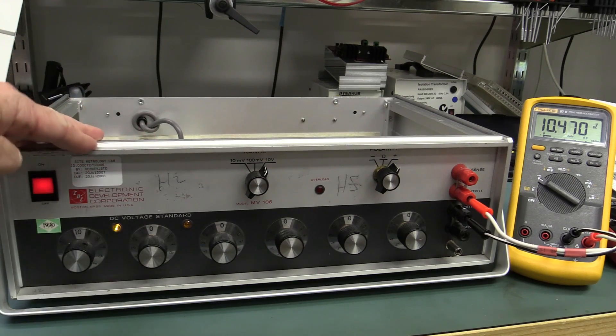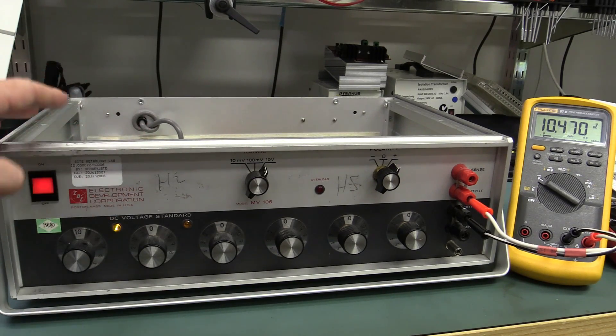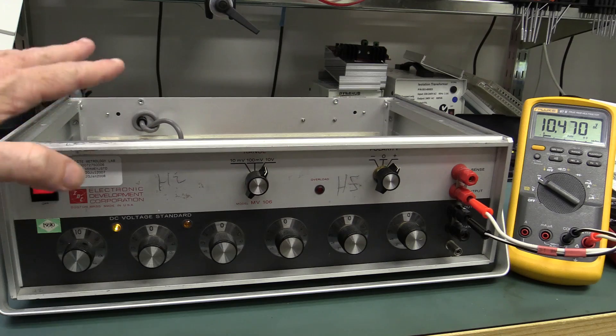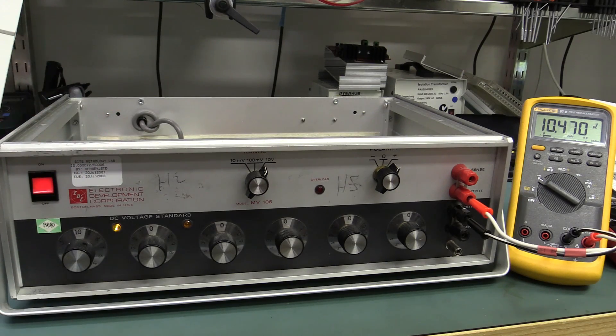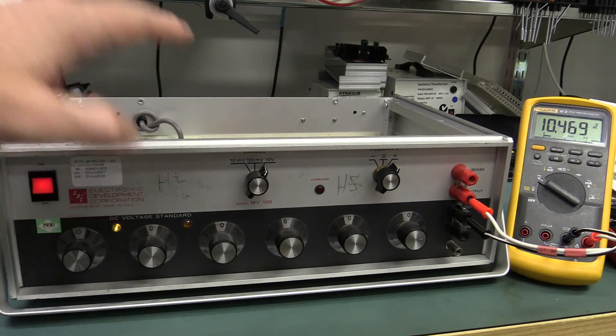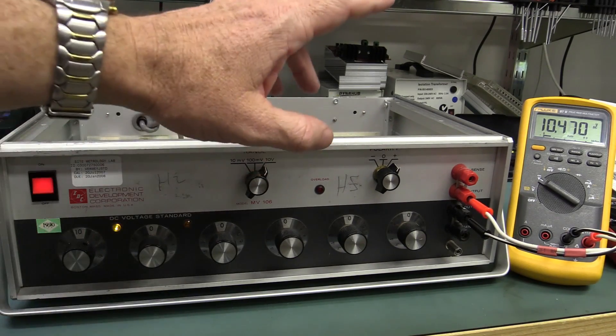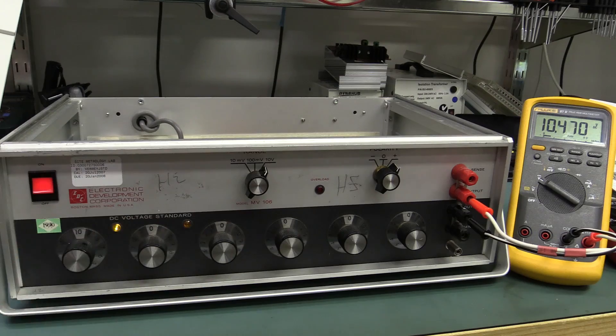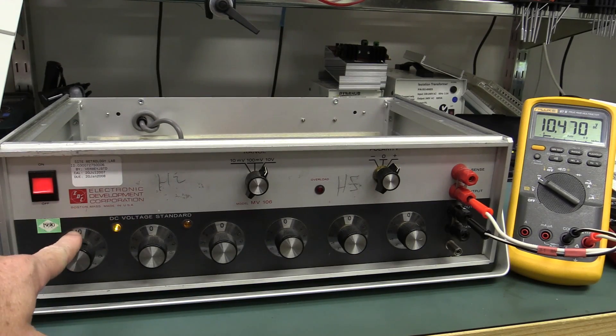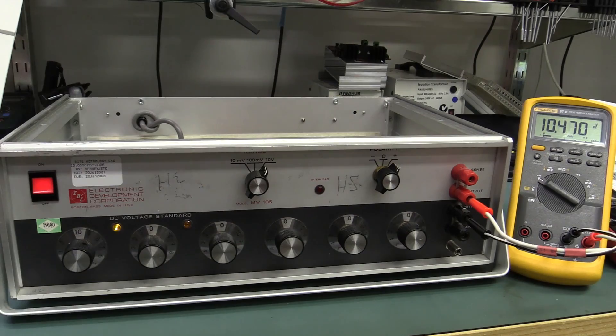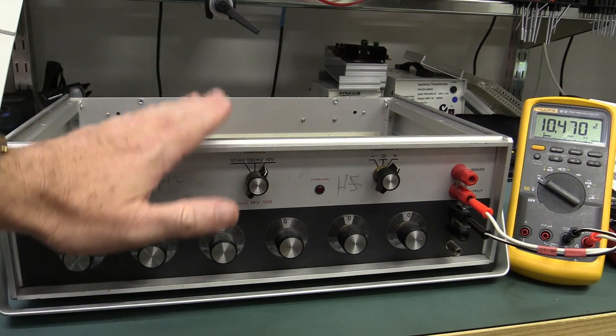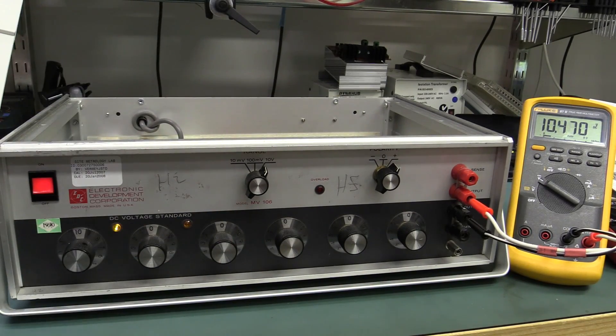Now, this is my EDC Kronhite MV106 voltage standard. If you haven't seen it before, I'll link in videos down below. Very nice, metrology grade voltage reference standard. And I was testing a multimeter the other day, plugging it into it, and as usual I set it for 10.0000 volts, and this thing is absolutely bang on. I've had it tested at a traceable cal standards lab.